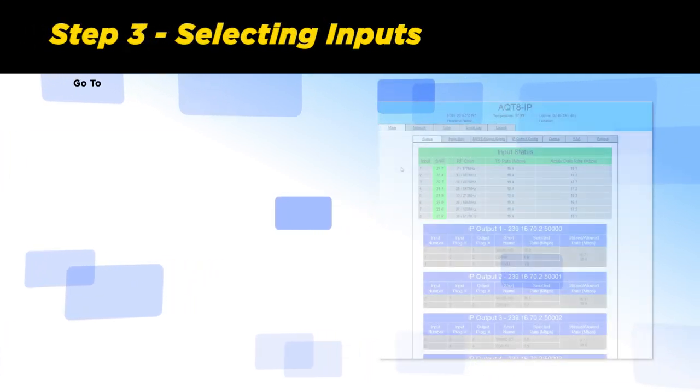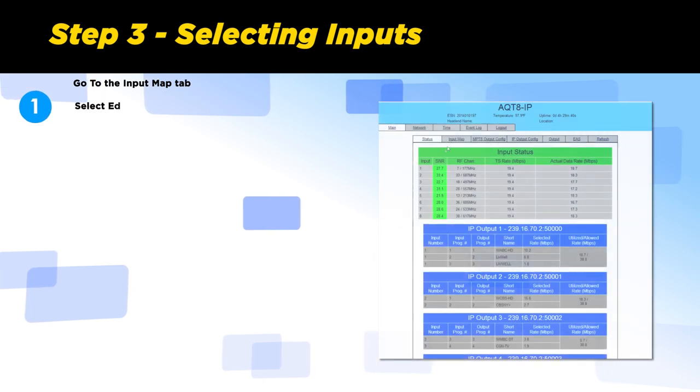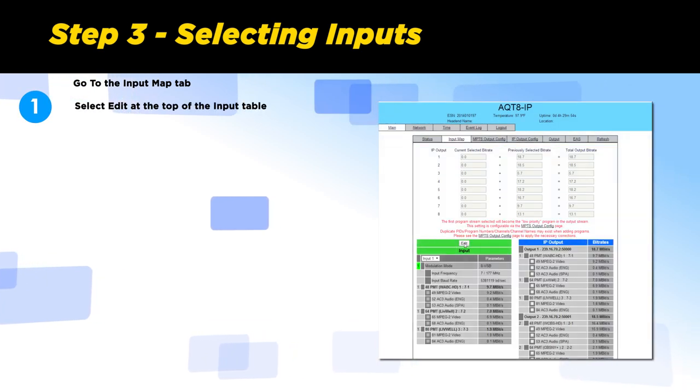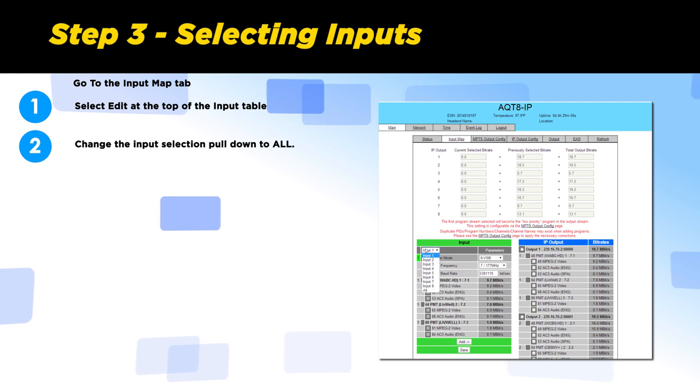Step 3: Selecting inputs. Go to the input map tab. Select edit at the top of the input table. Change the input selection pulldown to all.